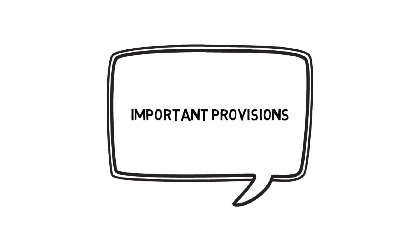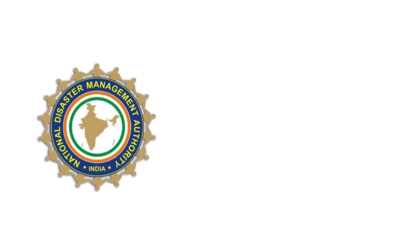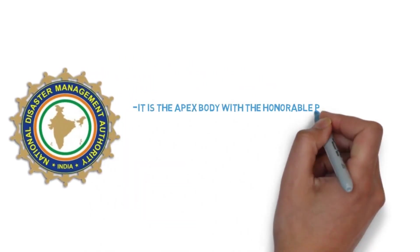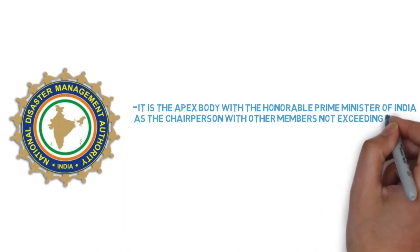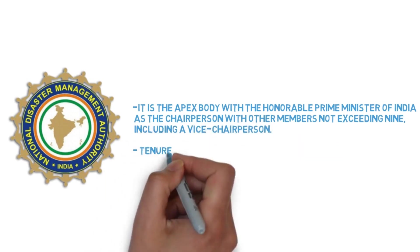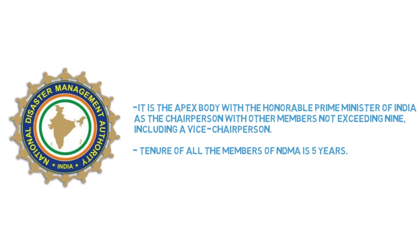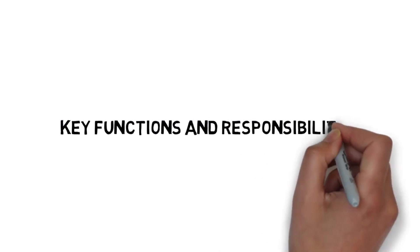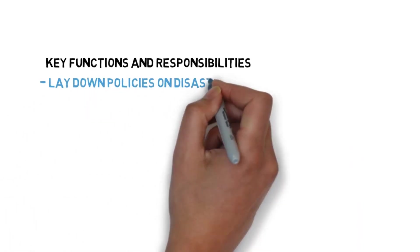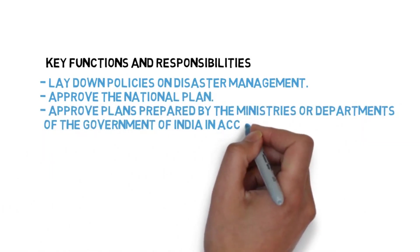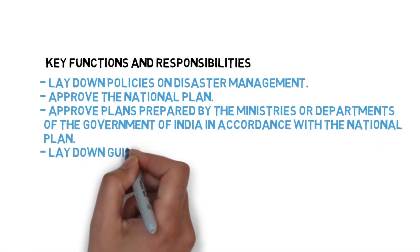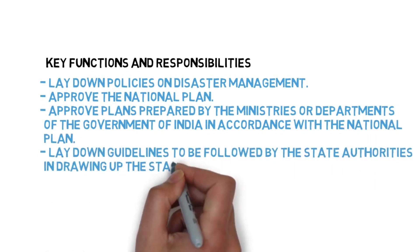There are important provisions in this Disaster Management Act. The act mandated the formation of the National Disaster Management Authority. It is the apex body with the Honourable Prime Minister of India as the chairperson, with other members not exceeding nine, including a vice-chairperson. The tenure of all members of the National Disaster Management Authority is five years. Key functions include approving the national plan, approving plans prepared by ministries in accordance with the national plan, and laying down guidelines strictly to be followed by state authorities.